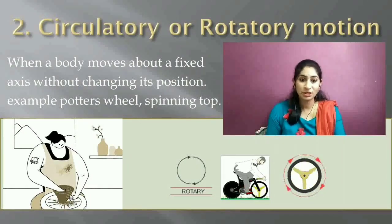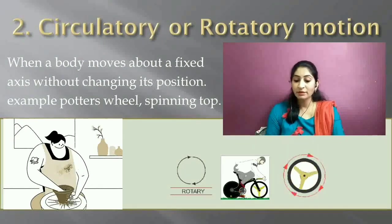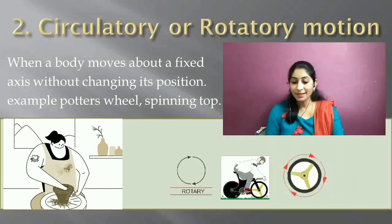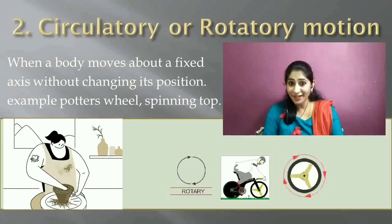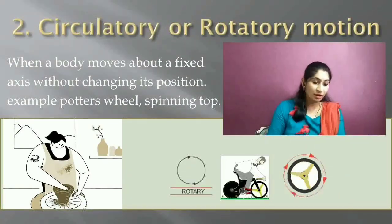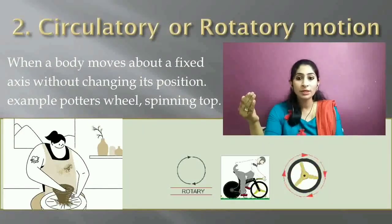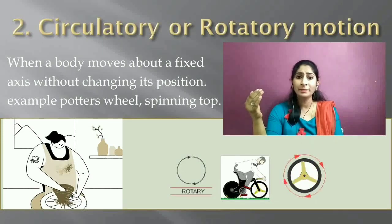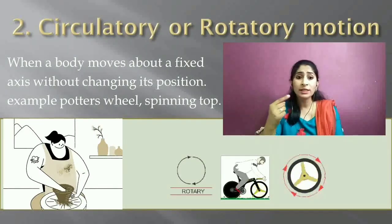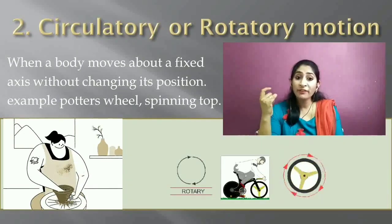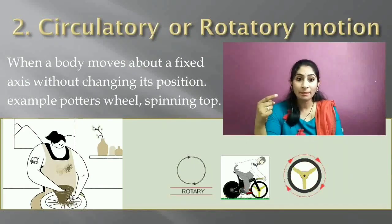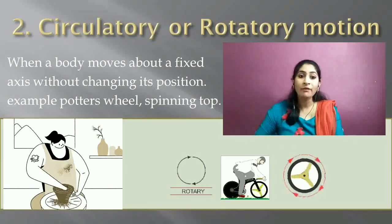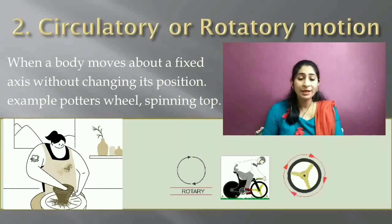The wheels of a bicycle are another example — they move in a circle about a fixed point without changing their path. We can also take the example of the Earth revolving around the Sun, which is given in the textbook: the Earth revolves in a fixed orbit about a fixed point, the Sun. So the Earth moving in a circular path about the Sun is an example of rotatory or circulatory motion.